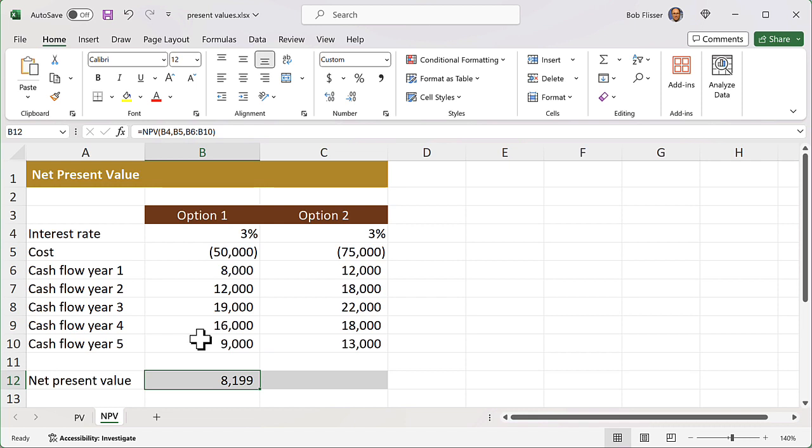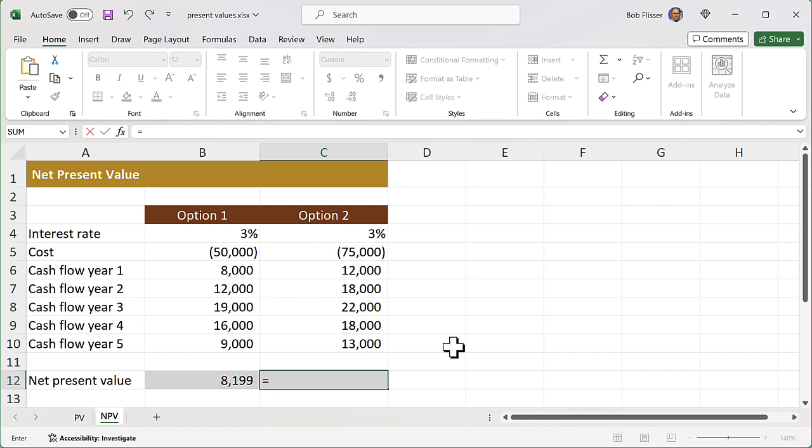Now, I could go and get the autofill and drag that to the right, but I'm not going to do that because I want to show you this one more time so you have another example. So we're going to say equals NPV. Open the parenthesis. There's the interest rate, comma. There's that first negative cash flow, comma, drag down the rest of those cash flows, and Control-Enter, or if you're on the Mac, Command-Enter, and we see what that net present value is.